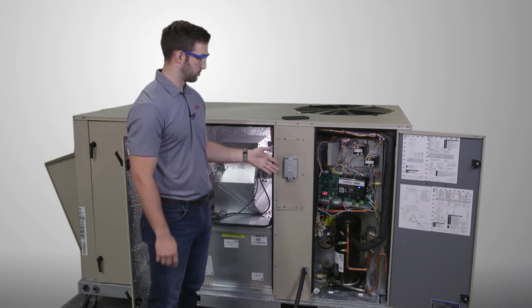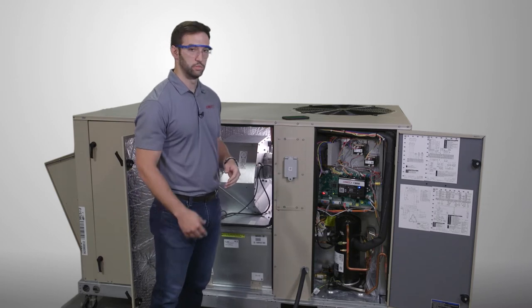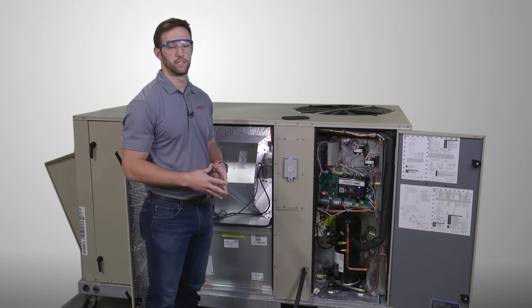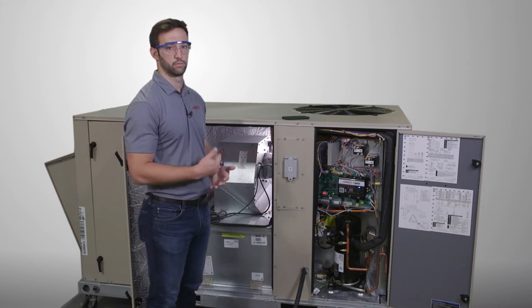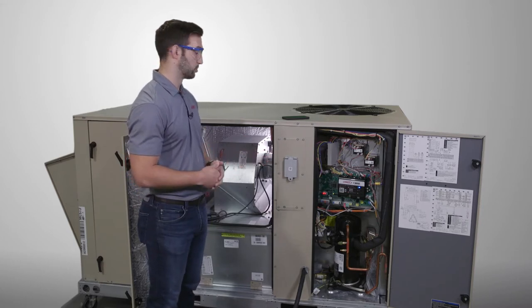For our variable speed compressor, it is going to be modulating based on the dehumidification demand in space. The further you are away from set point, the faster that compressor will run to remove more moisture from the air.